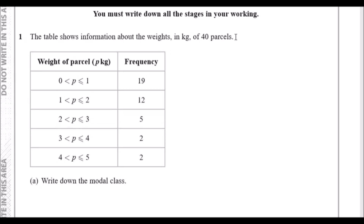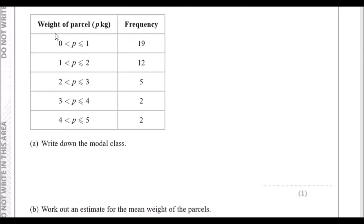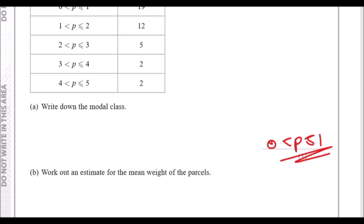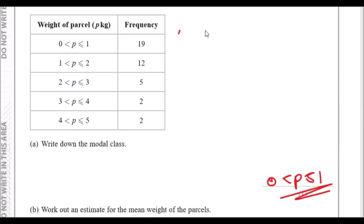We've got 20 questions, so let's crack on. Number one: the table shows information about the weights in kg of 40 parcels. For example, a parcel weighing between 0 and 1 kg — there are 19 of them. Part a: write down the modal class. Modal means the most common, and clearly the most common is 19 parcels between 0 and 1, so the modal class is 0 to 1.